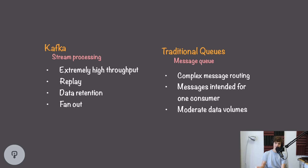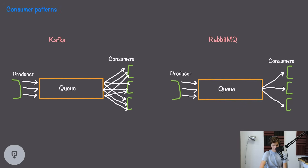Traditional message queues are designed for moderate data volumes. They're still very fast, but they don't handle the same amount of throughput that Kafka does. Those are some high-level differences between how these two systems are designed, but now let's dive into the lower-level details. The first thing we're going to look at is consumer patterns. As we mentioned before, Kafka is fanout, while traditional message queues are not.